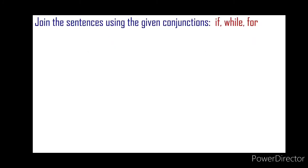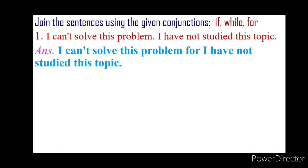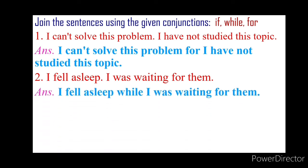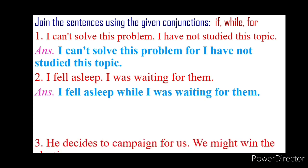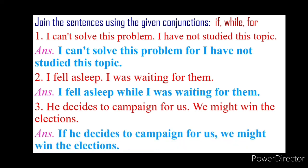Join the sentences using the given conjunctions: if, while, for. Number 1: I can't solve this problem. I have not studied this topic. Answer: I can't solve this problem, for I have not studied this topic. Second: I fell asleep. I was waiting for them. Answer: I fell asleep while I was waiting for them. Third: He decides to campaign for us. We might win the elections. Answer: If he decides to campaign for us, we might win the elections.